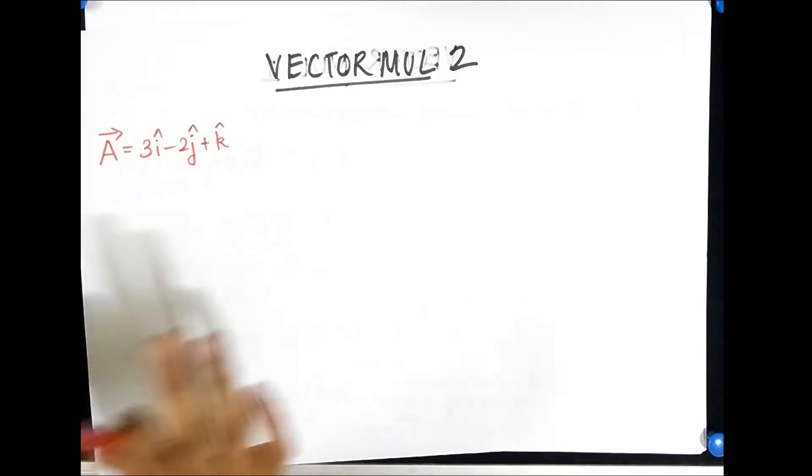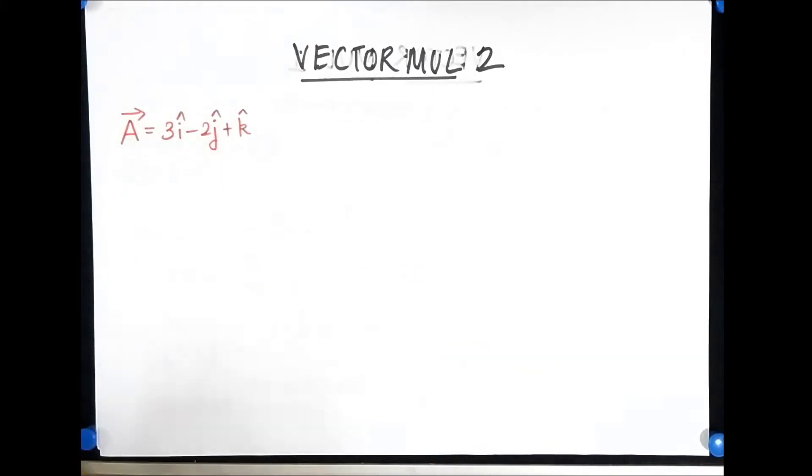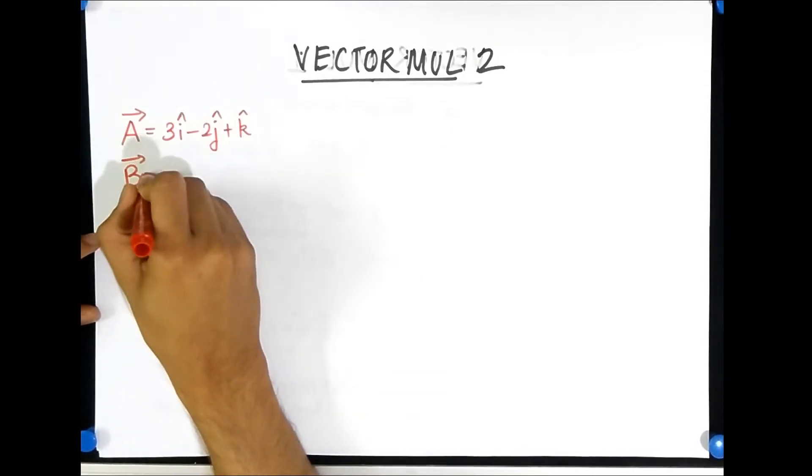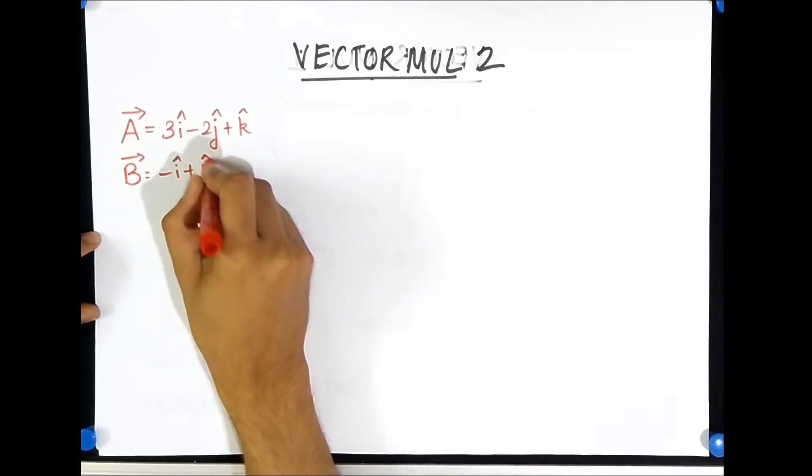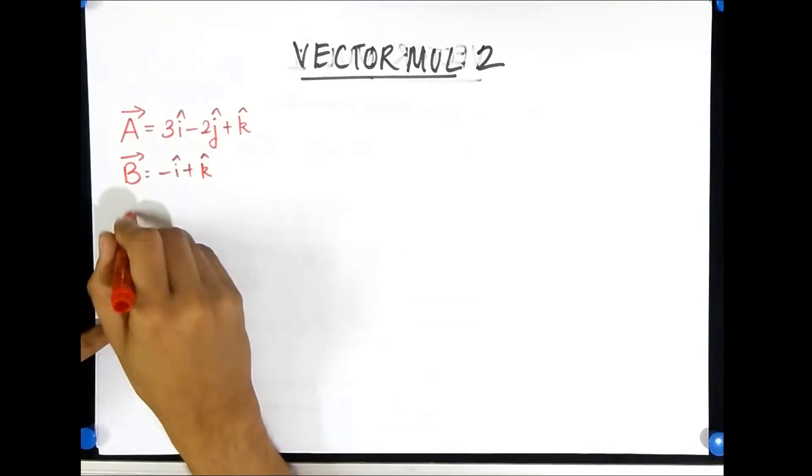Don't worry there is no need to be scared, 3 dimensional vectors are easy to handle and we will just do it. And suppose we have vector B which is minus i cap plus k cap. And now I ask you what is A dot B?